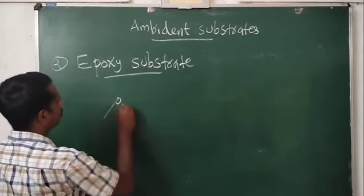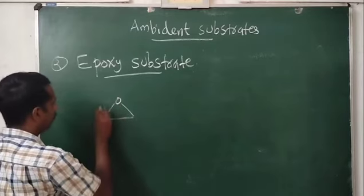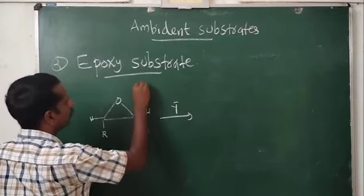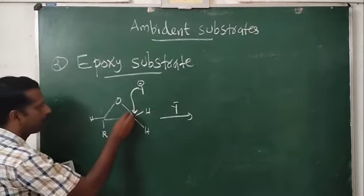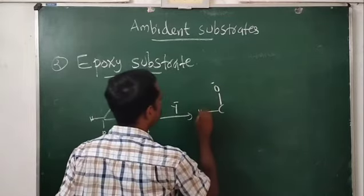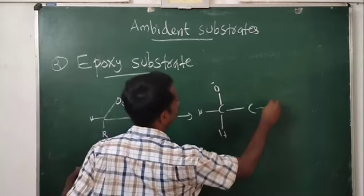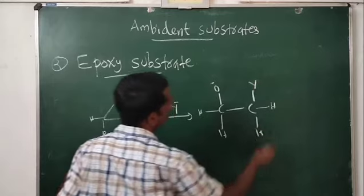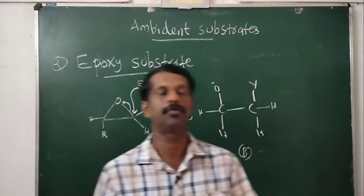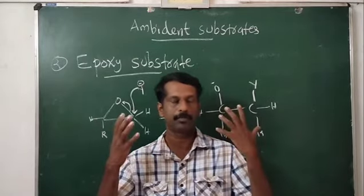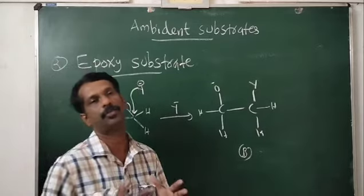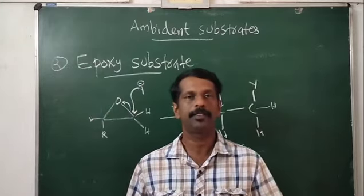For product B, the nucleophile Y⁻ attacks on the other carbon of the epoxide. The C–O bond shifts to oxygen, giving O⁻ on the other carbon and Y attached to this carbon. This is product B. So, other than 1,3-dichlorobutane, there are two types of substrate molecules that can act as ambient substrates: one is allylic type, and the second is epoxy substrate. That's all about ambient substrate. Thank you.